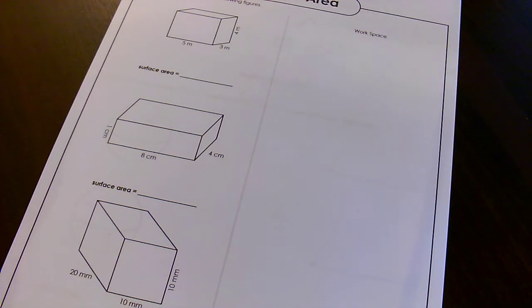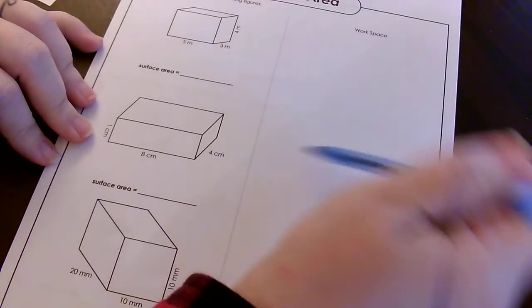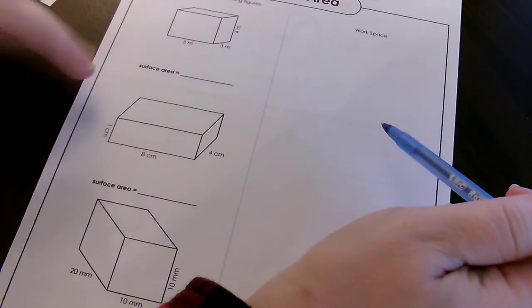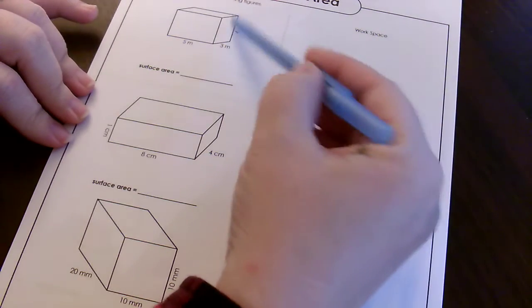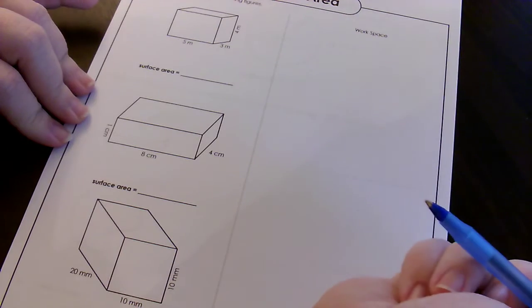Okay, this next one we're going to do surface area of a rectangular prism again and we have the picture here and we've got the workspace to work over here. So I'm going to get the measurements for each one of my sides in order to be able to plug it into the formula and then add them up.